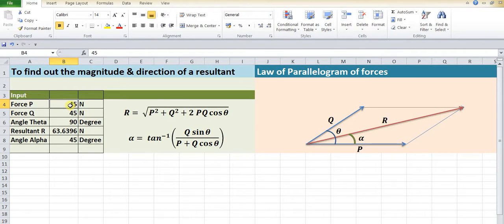Suppose we have forces where our first force P is 35, the second force Q is 50, and suppose they make an angle of 35 degrees between them. Then you can easily find out what will be the resultant R in magnitude and what will be the direction alpha of that particular resultant.